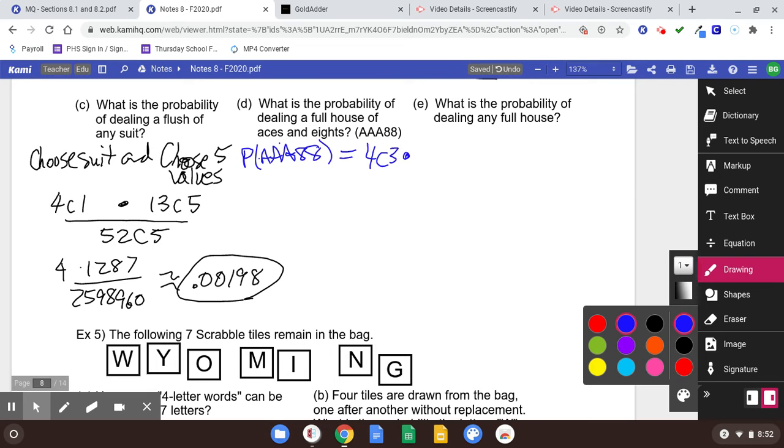And how do we get those eights? Two eights out of how many eights? So 4 choose 2 to get the eights over 52 choose 5. Again, what you could do is say, well, that's eight cards. I've got the aces and the eights taken care of. 52 minus 8 is 44. So you would have 44 other cards to choose zero from. So 4 choose 3 is 4, and 4 choose 2 is 6. So we're going to have 24 over 2,598,960, which is about 0.00000923.